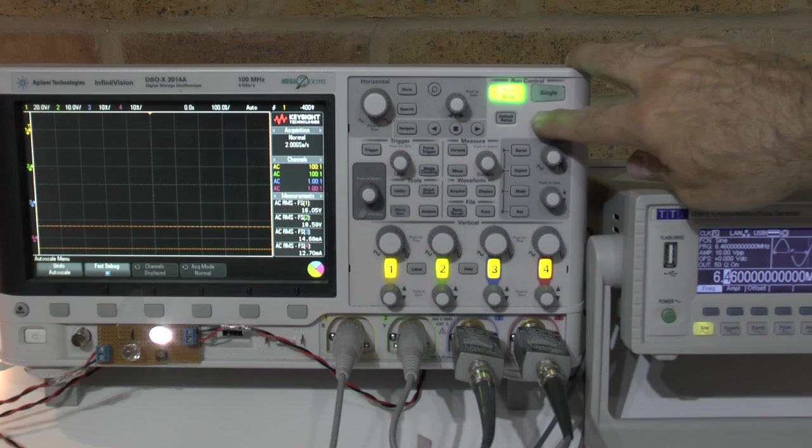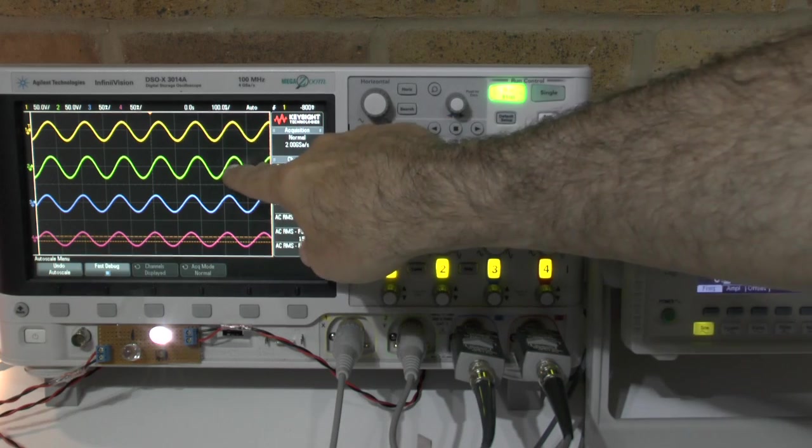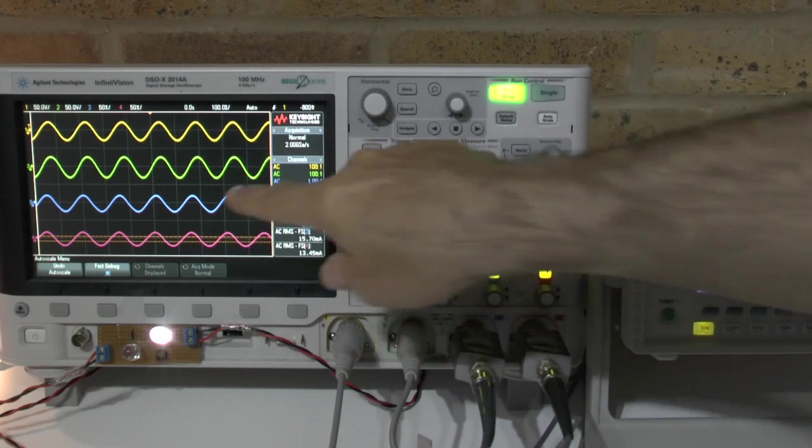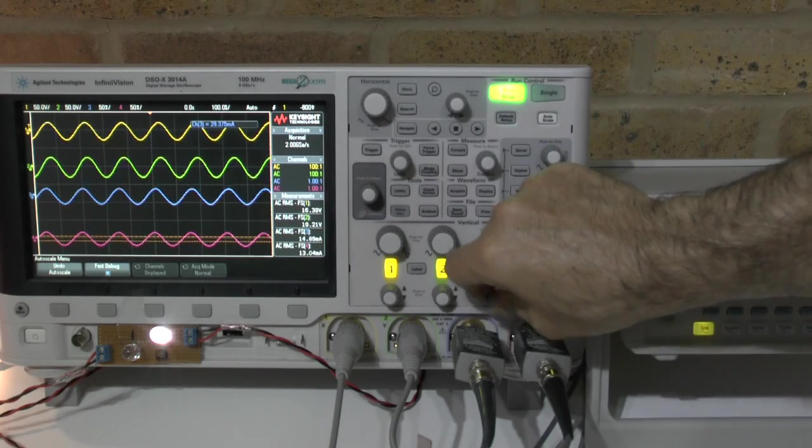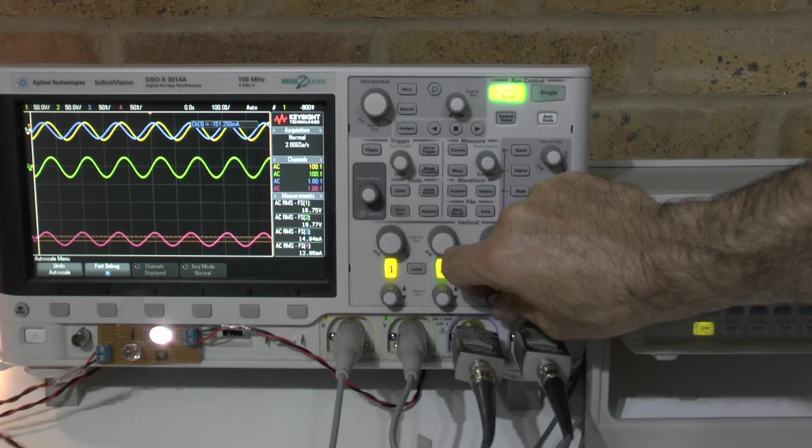Let me align that. So we see again here voltage is aligned. Current is aligned. And on source 1 the current is leading as it should be.